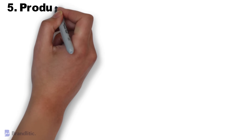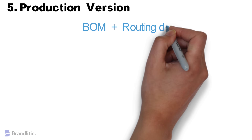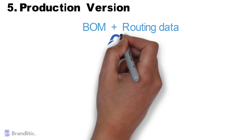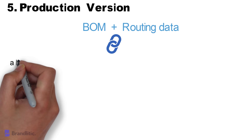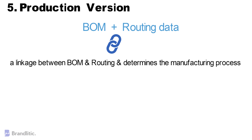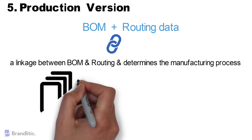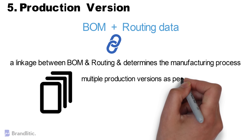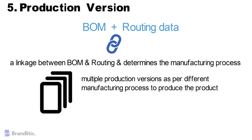Fifth is the Production Version. The production version is a combination of BOM and routing data for production. It is the linkage between BOM and routing and determines the manufacturing process. Do note that there can be multiple production versions as per different manufacturing processes to produce the product.